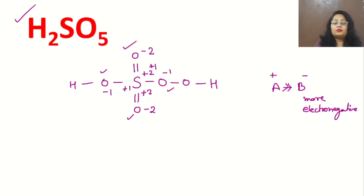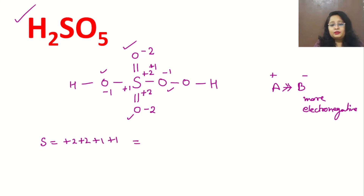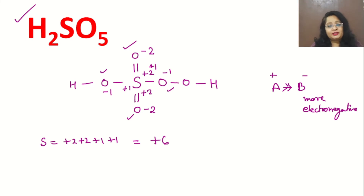Now let's count the total charge of sulfur. Sulfur is having plus two, plus two, plus two, plus two, plus one, and plus one. The total will be plus six. So the oxidation state of sulfur is plus six.